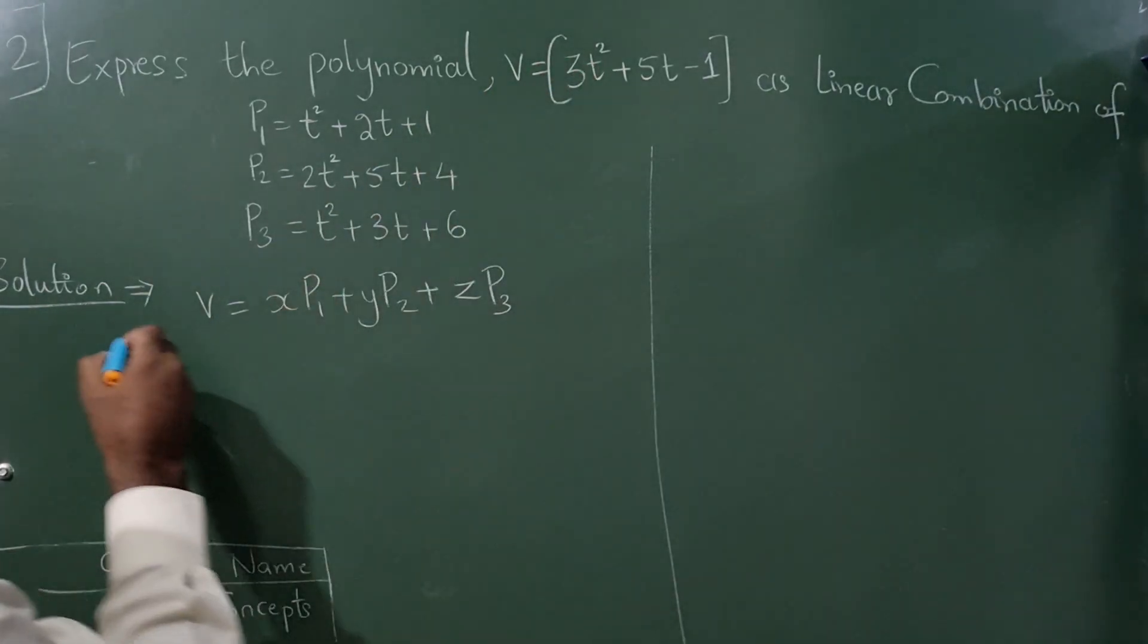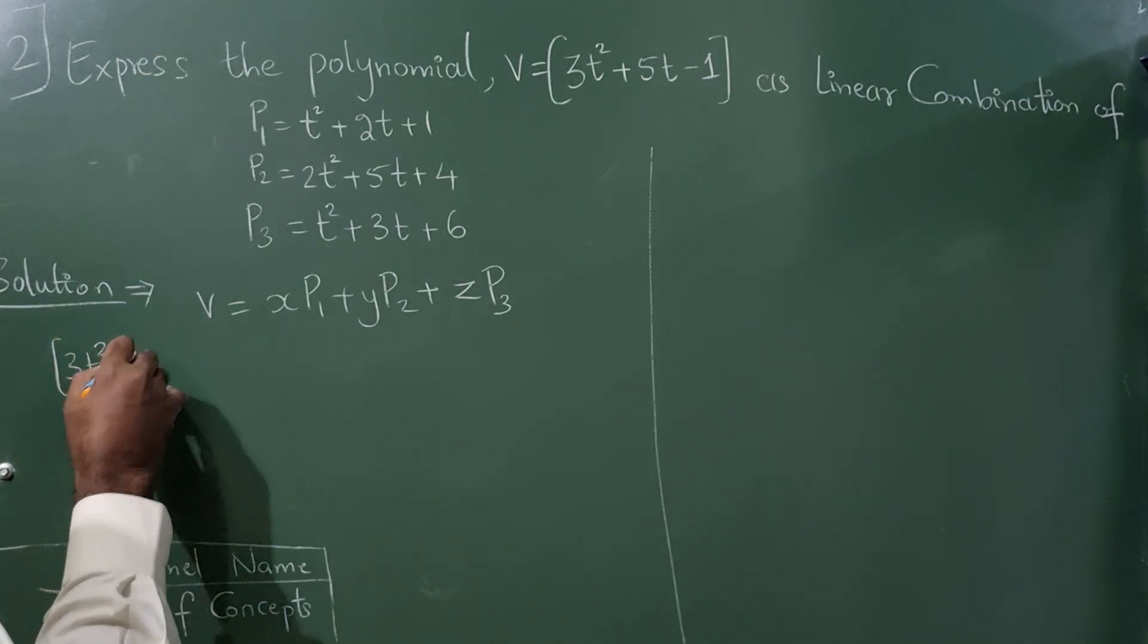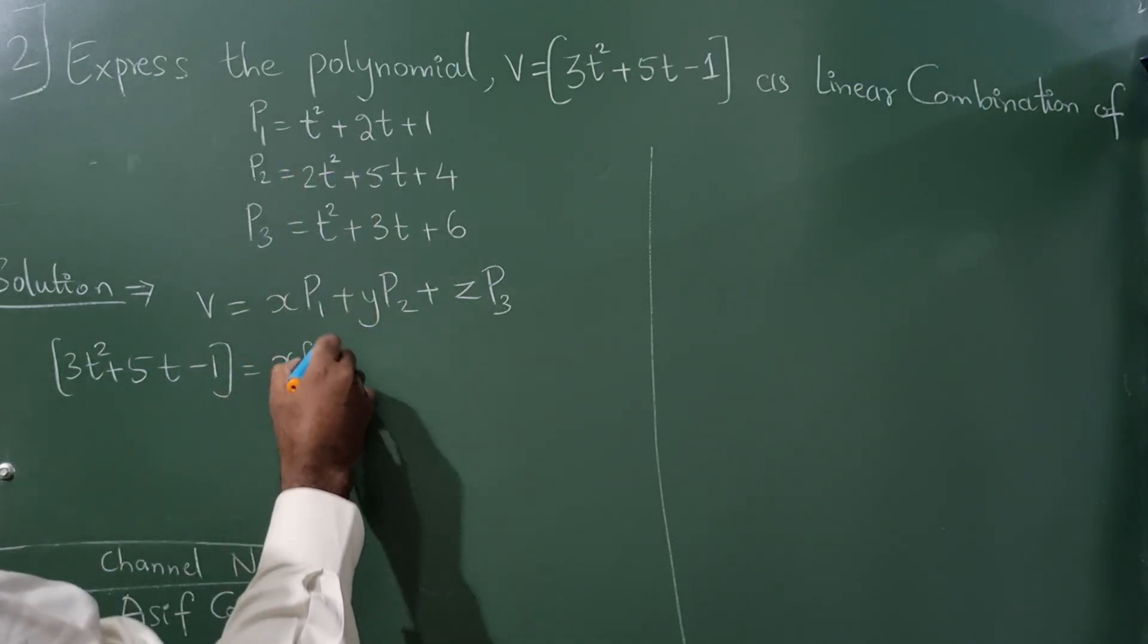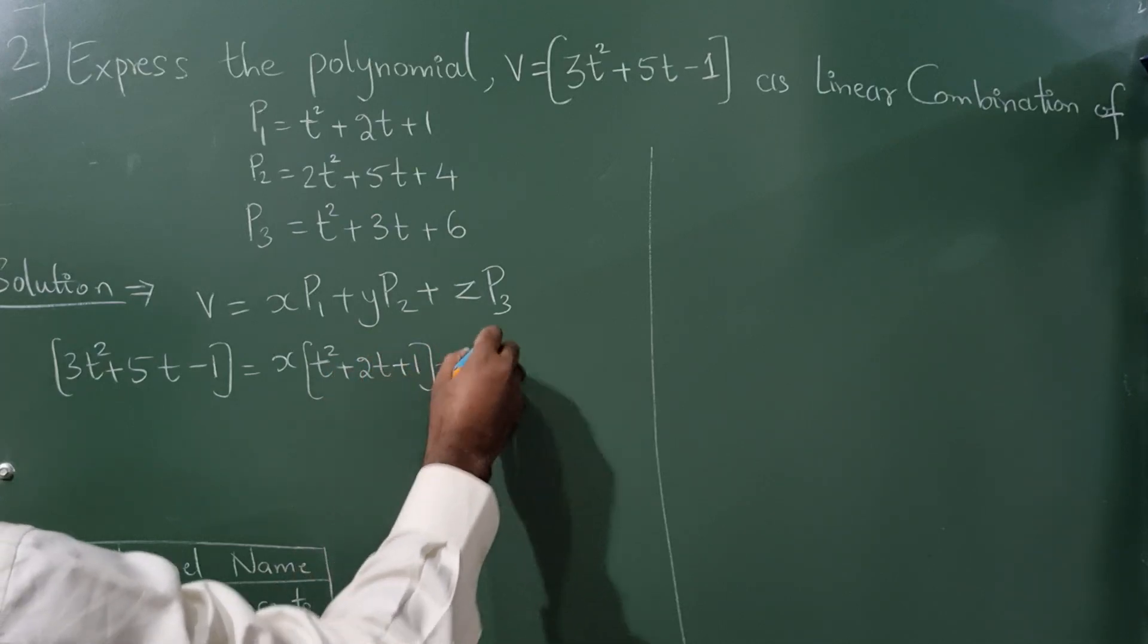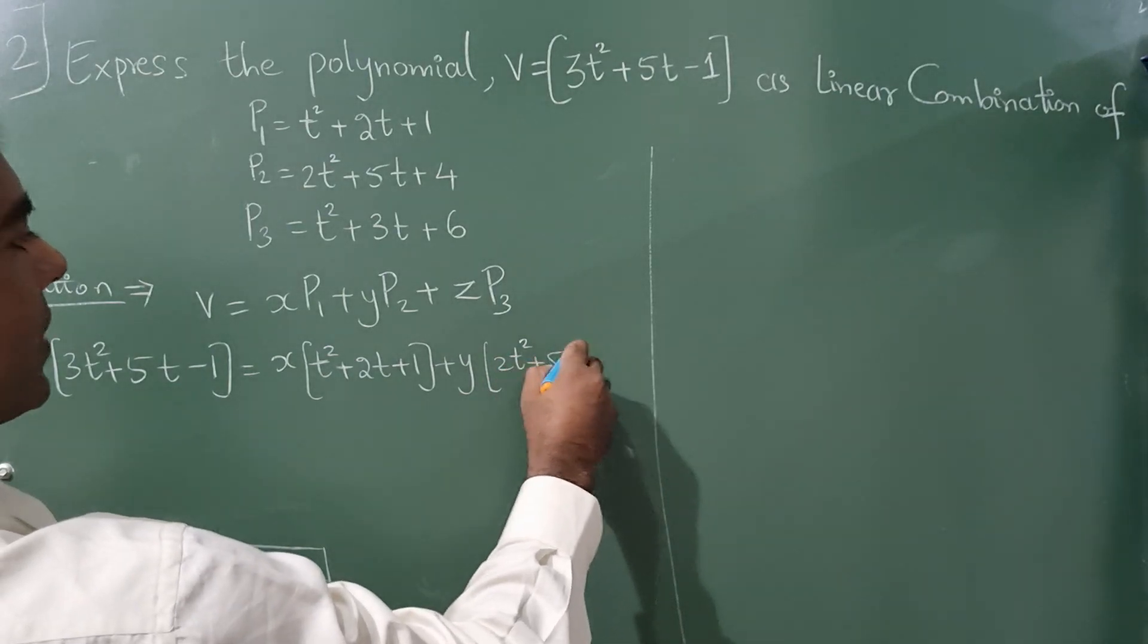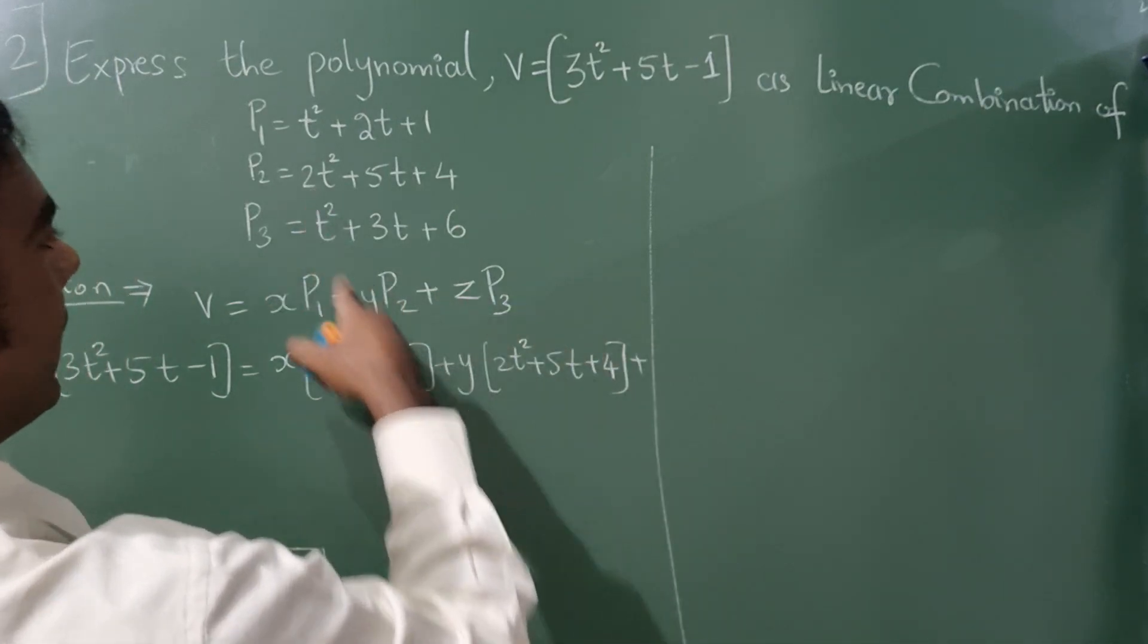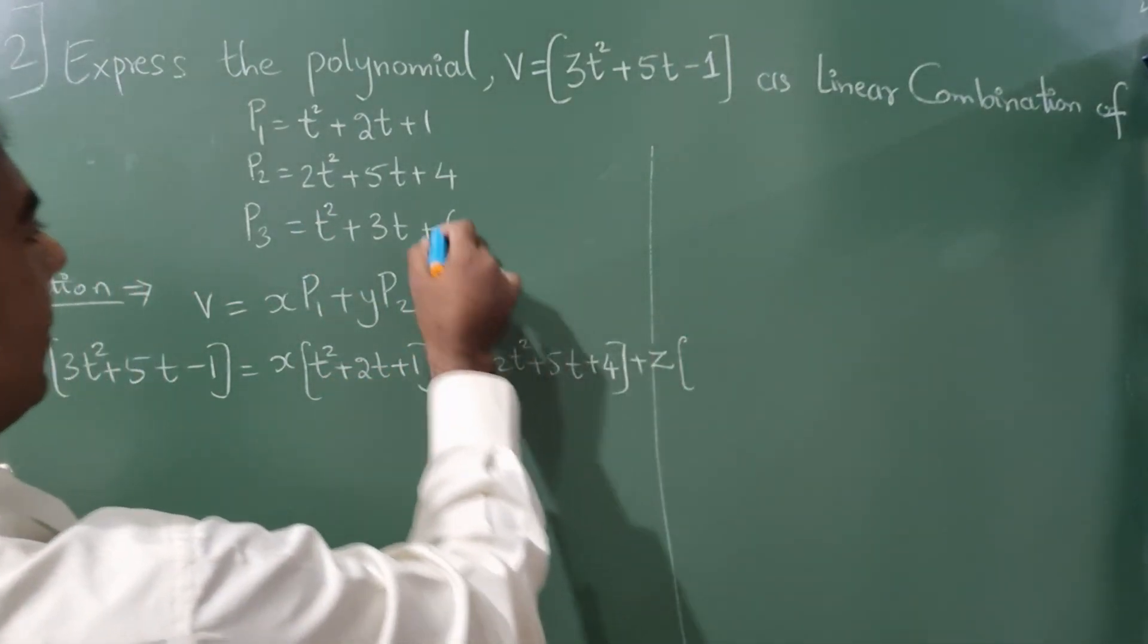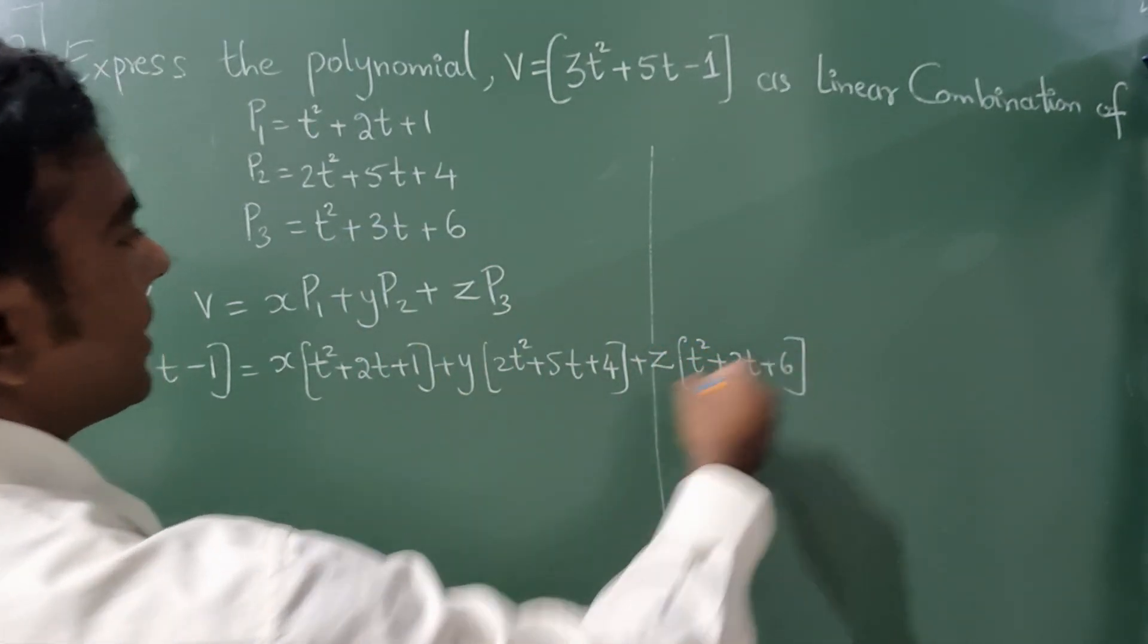Now what is vector v? It is 3t² + 5t - 1. x and p1 value is t² + 2t + 1, y, p2 is 2t² + 5t + 4, plus z, p3 is t² + 3t + 6.